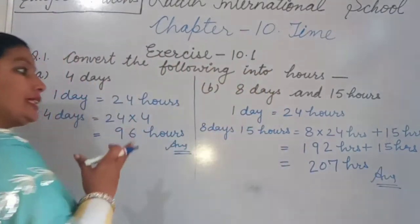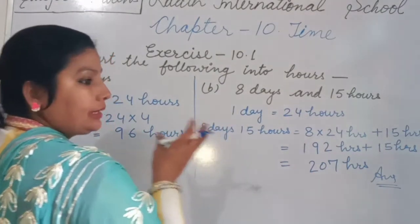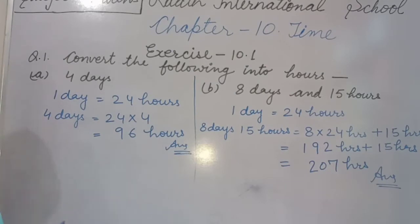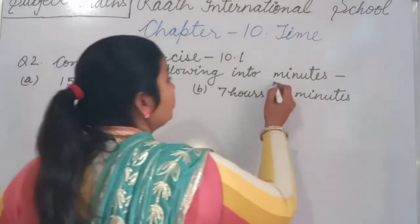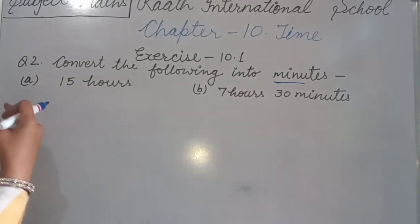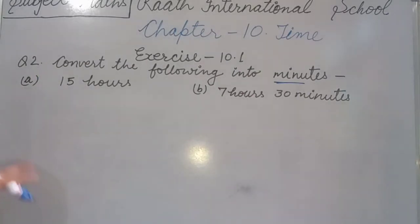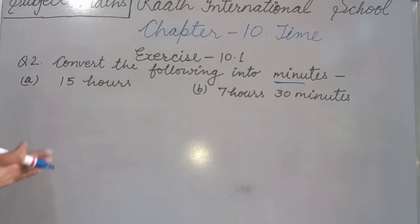Parts C and D are the same as B — you will do those yourself. Now Question 2: Convert the following into minutes. Hours are the bigger unit and minutes are the smaller unit, so we multiply again.